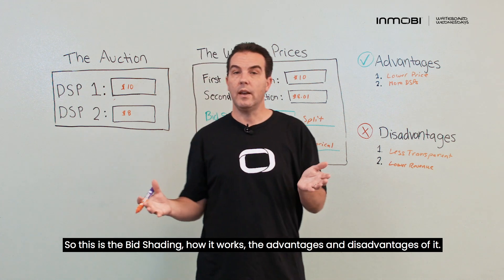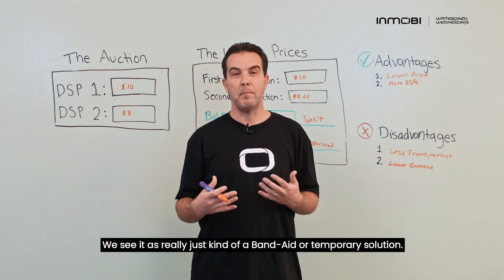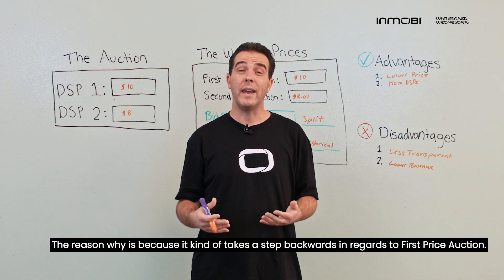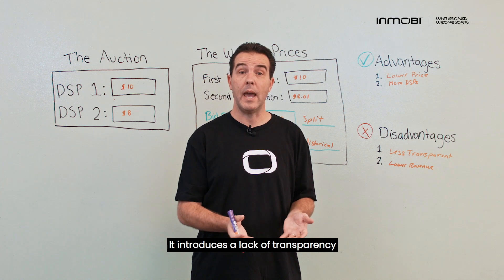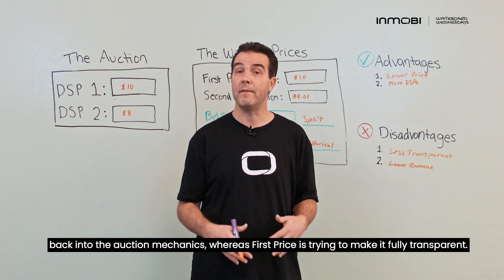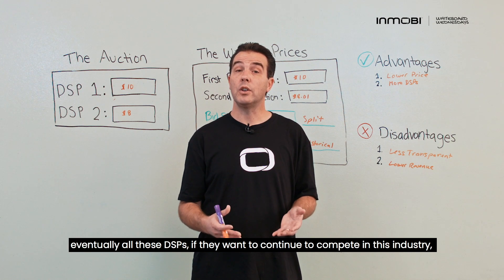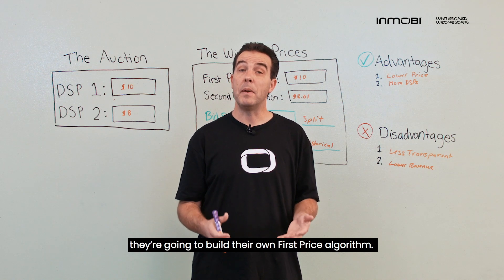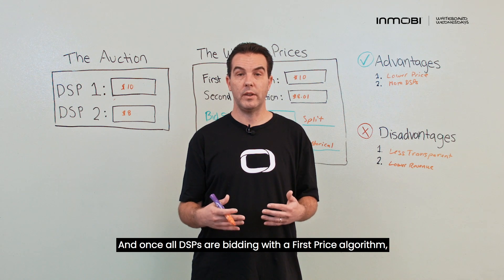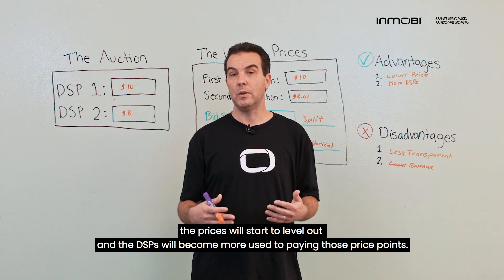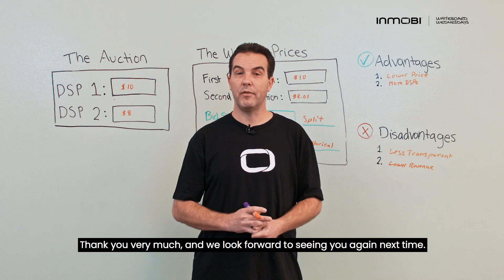That's bid shading — how it works and its advantages and disadvantages. We see it as really just a band-aid or temporary solution. It takes a step backwards regarding first price auctions by reintroducing a lack of transparency into the auction mechanics, whereas first price auctions are trying to make things fully transparent. We also see it as temporary because eventually all DSPs that want to continue competing will build their own first price algorithm. Once all DSPs are bidding with a first price algorithm, prices will start to level out and DSPs will become more used to those price points. That's it for this Whiteboard Wednesday — thank you very much, and we look forward to seeing you again next time.